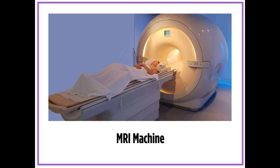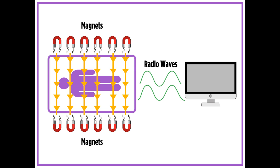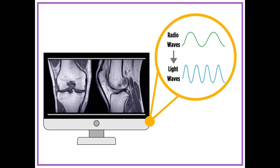Daniel explains that the MRI machine is shaped like a tube. The tube is actually a gigantic magnet that can see inside any part of our bodies. The machine works by using magnets. A giant magnet is used to make the person's body send radio waves to a computer. The computer converts the radio wave energy into light waves, and by doing so, the computer can make a picture of the inside of the patient's knee.